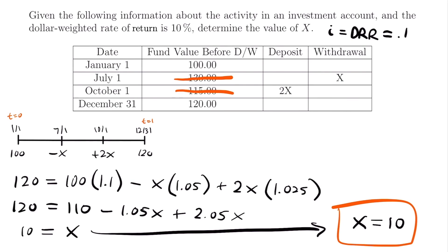Overall, that was a pretty simple process to solve for x. We just had to set up our equation of value using the timeline derived from the given table. Now that we know x = 10, the withdrawal equals $10 and the deposit equals 2 × 10 = $20. That is the end of this example. If you have any questions, feel free to leave them in the comments — I'll see you next time.